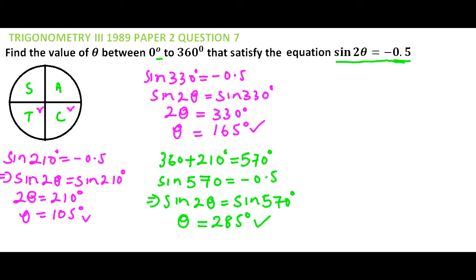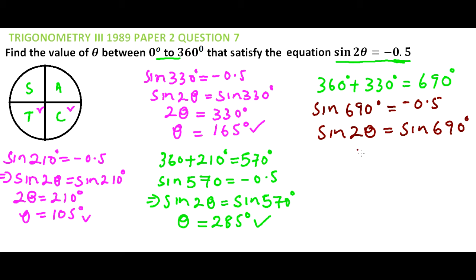The next angle we can get is 360 plus 330 degrees, which gives us 690 degrees. Let's check whether our angle satisfies the equation. Sin 690° = -0.5, implying sin 2θ = sin 690°. We divide 690 by 2 to get 345 degrees. Our angle is still within the range of 0 to 360.